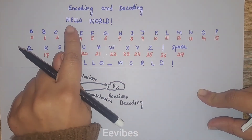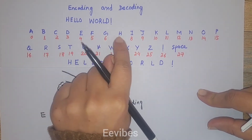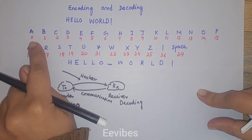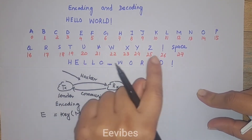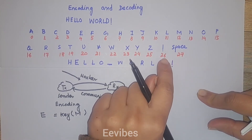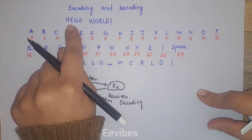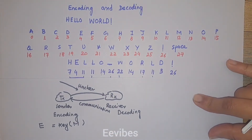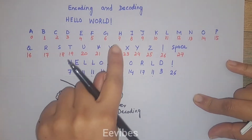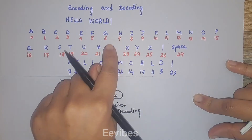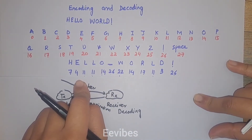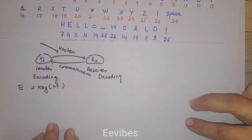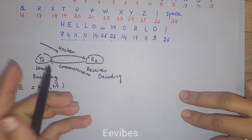The first step is to assign unique codes or numbers to the alphabets present in the message. You can start from any value — here I am starting the alphabets with the number zero. The space is given the value 27 and the exclamation sign is given the value 26. The next step is to assign those codes to the original message, so 'h' is assigned 7 and 'e' is assigned 4. The space is assigned a code as well.